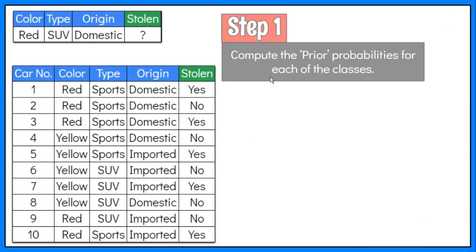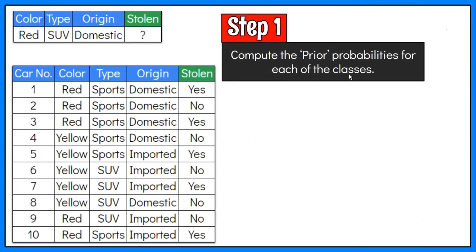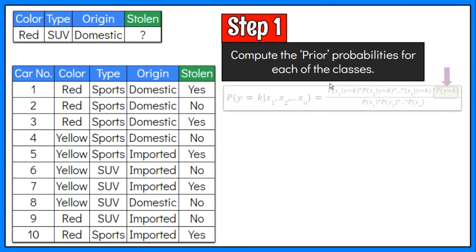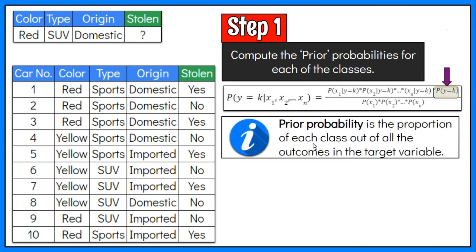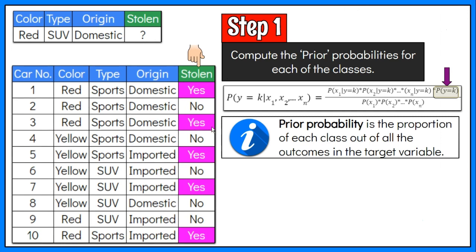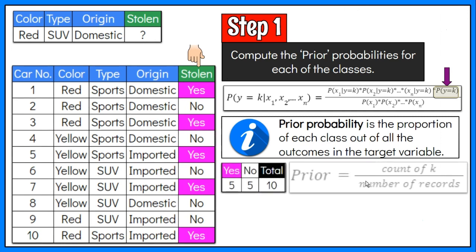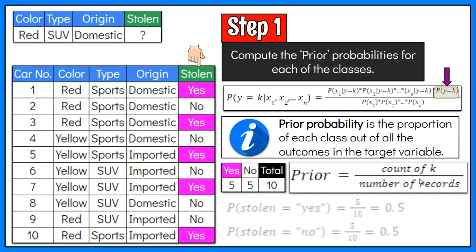Step 1: Compute the prior probabilities for each of the classes. Prior probability is a proportion of each class out of all the outcomes in the target variable — in our problem, it is the stolen variable. Out of the 10 records in the training data, there are 5 yes and 5 no outcomes. Using the formula for priors, the probability for yes is equal to 5 over 10, or 0.5, and the probability for no is equal to 5 over 10, which is also 0.5.